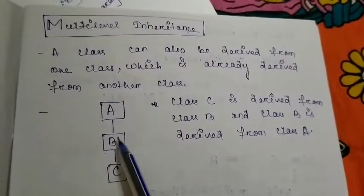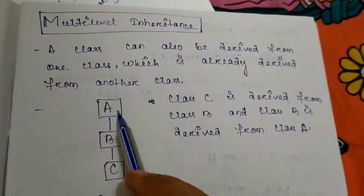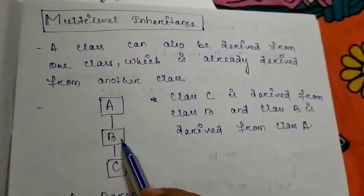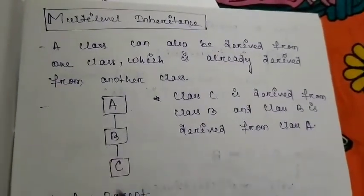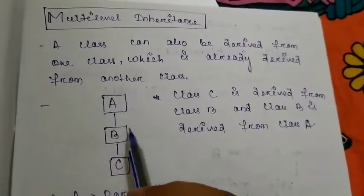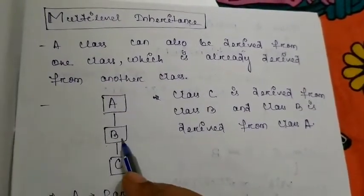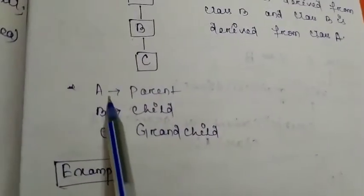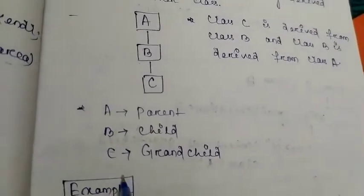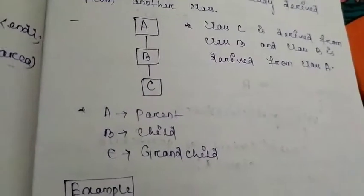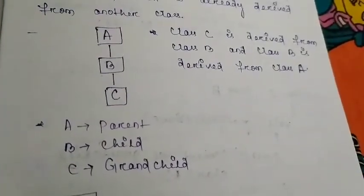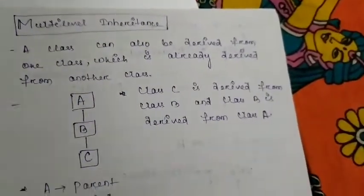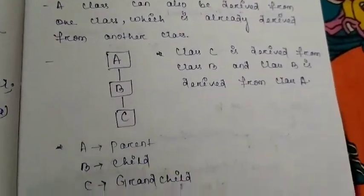As you can see in this picture, class B is derived from class A, and class C is derived from class B. The real-life example is: A is your grandparent, B is your parent, and C is the child. So A is the parent, B is the child, and C is your grandchild. Let's see an example of how you can implement this multi-level inheritance in a C++ program.